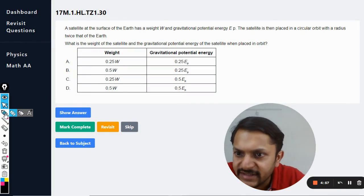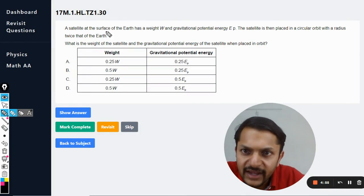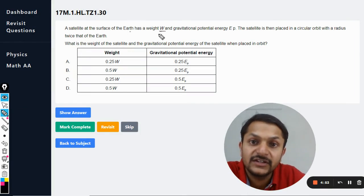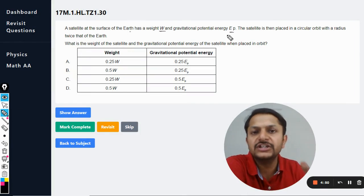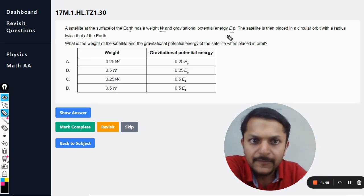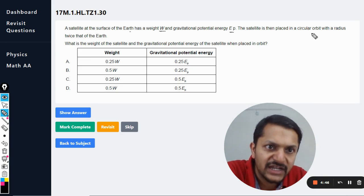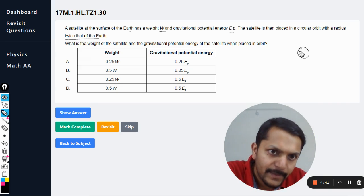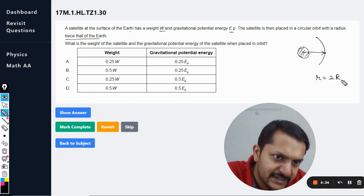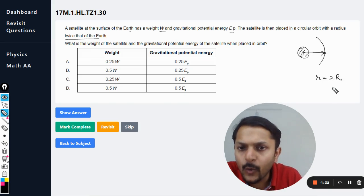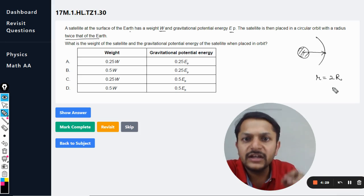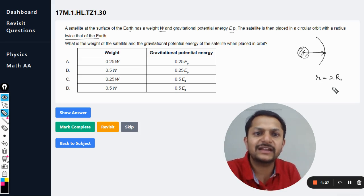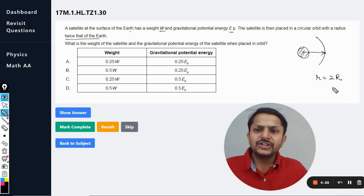Okay dear students, let us see what is there in this question. A satellite at the surface of the earth has the weight W and the gravitational potential energy at the surface is Ep. The satellite is then placed in a circular orbit with a radius twice that of earth. So this is the earth and this is the satellite. The radius of the satellite is twice that of the earth. What is the weight of the satellite and the gravitational potential energy of the satellite when placed in the orbit?